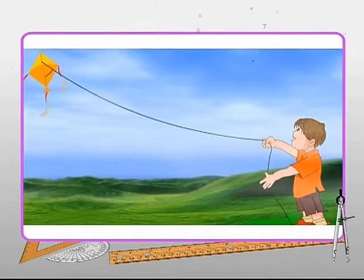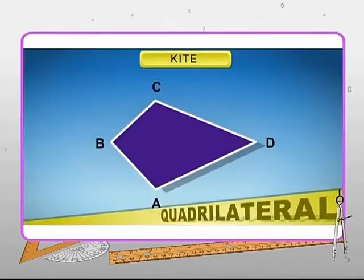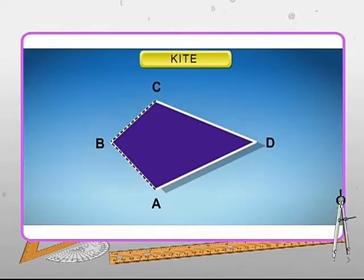Do you know what a kite is? Yes, the one flown in the air at the end of a long string. A kite is a quadrilateral with two pairs of equal adjacent sides. The figure shown here is a kite. In the figure, adjacent sides AB and BC are equal in length. Similarly, side AD is equal to side DC in length.